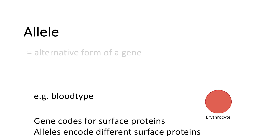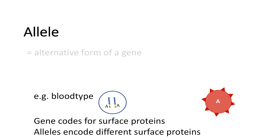We have our red blood cell here. If we assume we have two versions of the A-allele, we have only the A surface protein expressed. If we assume we have two B-allele versions, we have the B surface protein expressed.